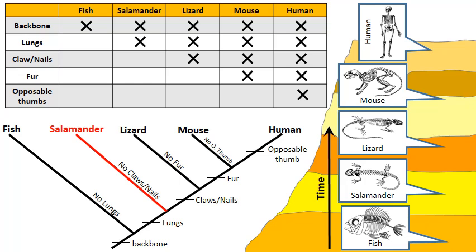According to the rock layers, the salamanders are a little younger than the fish, and that's why they branched off next. Continuing up the rock layers, I come to the lizards — notice how they're in the middle of the five, and notice how in my cladogram they're in the middle of the five to branch away. Then getting nearer the top, we have the mouse, and then at the very top — the most recent — the human. So when I compare the cladogram I drew to the fossil evidence, hopefully they match with no discrepancies.